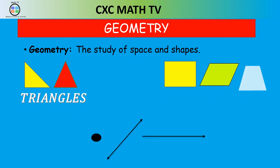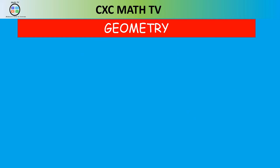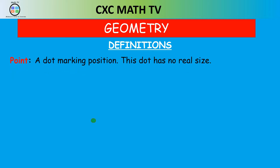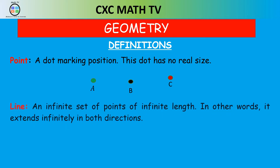Let's start with some definitions. First is a point. A point you might see as a dot marking position, and this dot doesn't really have any size. So we can put some dots here — point A, point B, or point C — just some small points or small dots. That's a point.